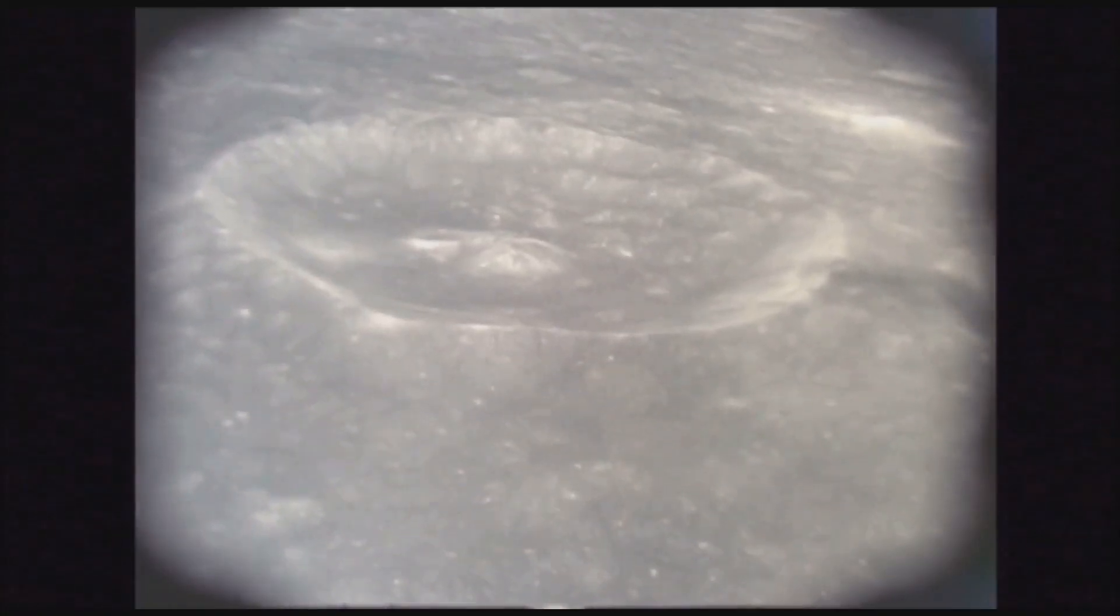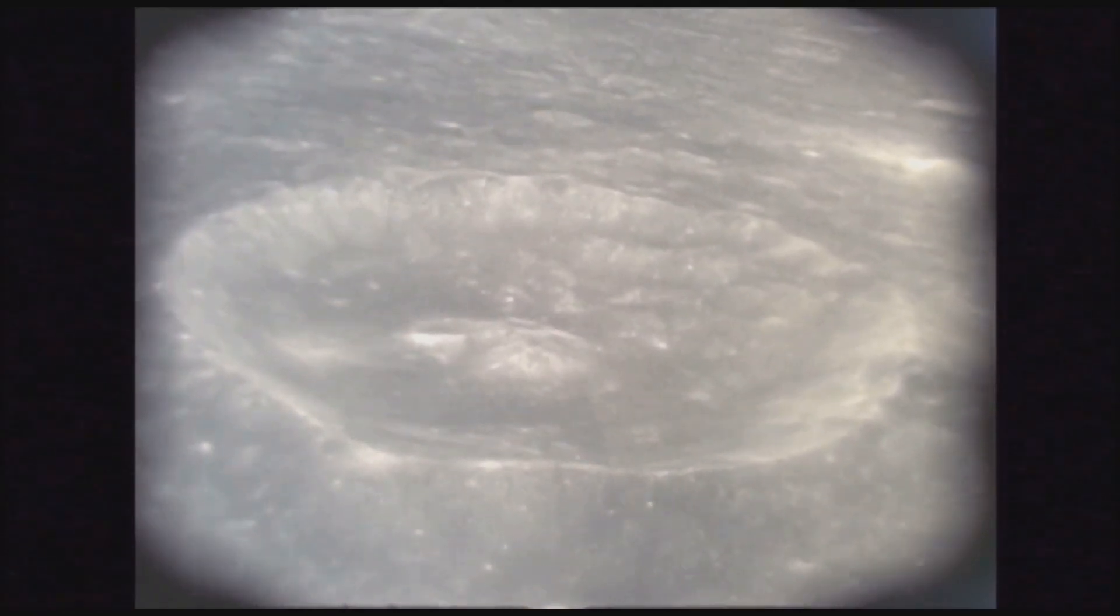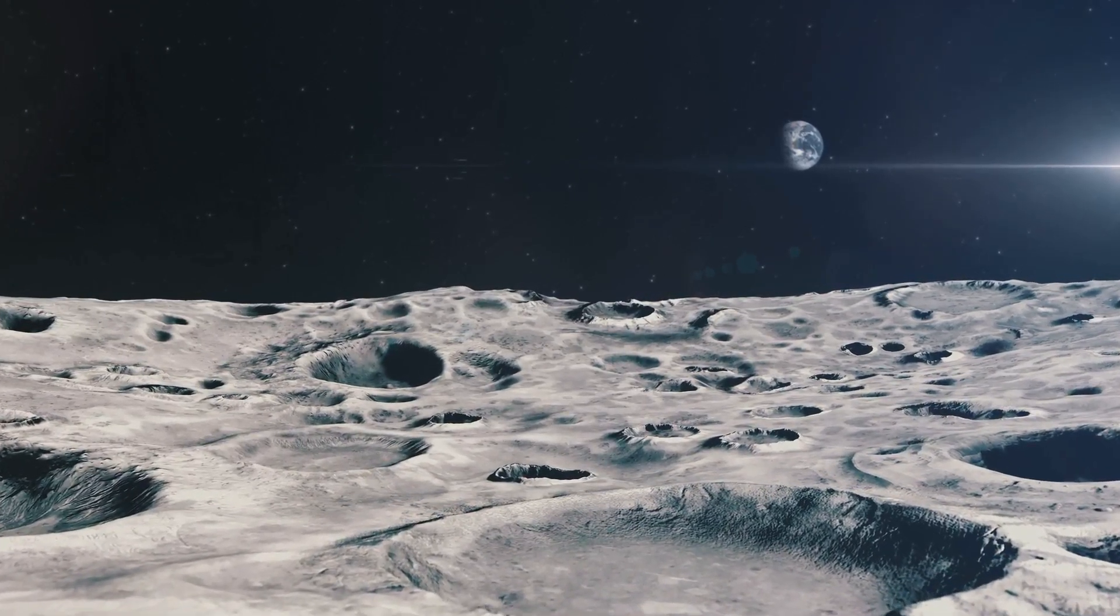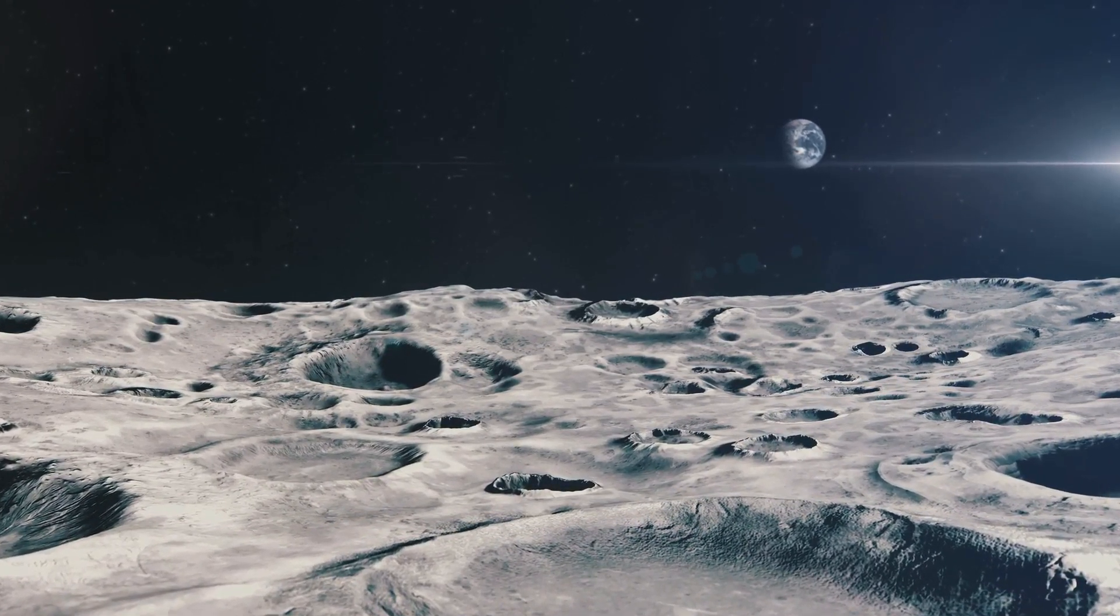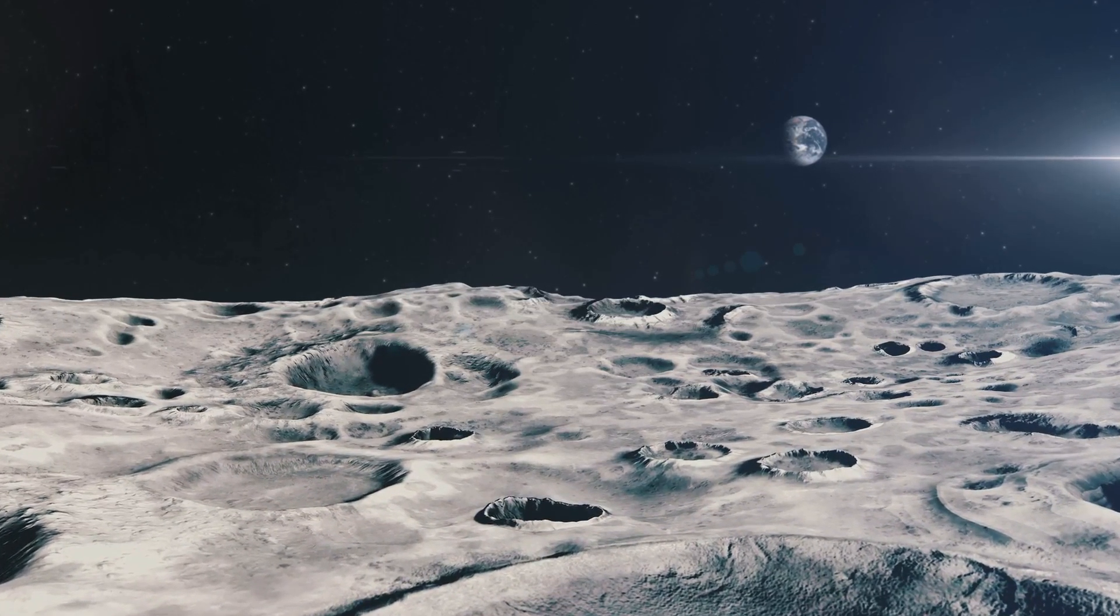This scenario, known as the giant impact hypothesis, is the leading explanation for the Moon's formation. It explains many of the Moon's unique characteristics, including its relatively large size compared to Earth, and the similarities in composition between lunar and terrestrial rocks.